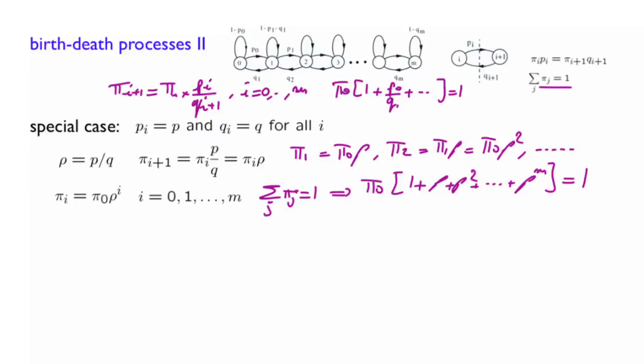Let's now complete the calculations for two special cases. If rho equals 1, that means p equals q, then pi i equals pi of 0 for all i. It means that all the steady state probabilities are equal. This special case is called a symmetric random walk. You start at a state at a point in time, either you stay in place, or you have equal probability of going left or right.